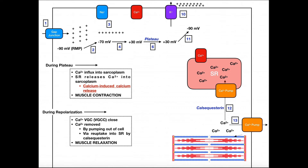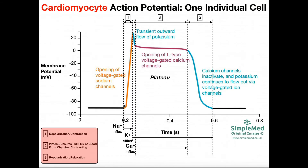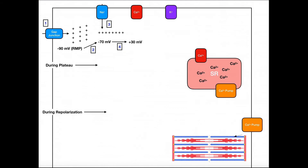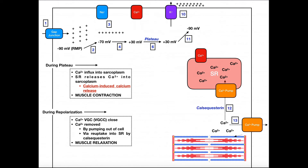The main takeaway from this video is that there are many things happening during each step of the cardiomyocyte action potential. Hopefully the diagram gives you a good understanding of what's going on physiologically in the cardiomyocyte. Please make sure to like this video and subscribe to my channel for future videos and notifications. Thank you very much.